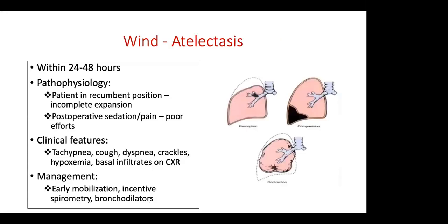The first W is wind, that is atelectasis, which usually occurs within 24 to 48 hours of surgery done under general anesthesia. It may occur under regional anesthesia as well but is more common with general anesthesia. The pathophysiology is that the patient remains in a recumbent position during prolonged surgery, and post-operative sedation and pain prevent comfortable thoracic movement and maximum breathing capacity, causing atelectasis.